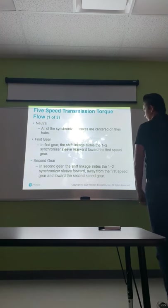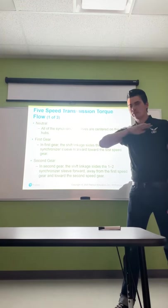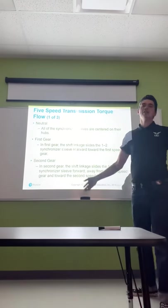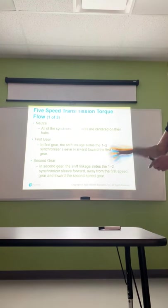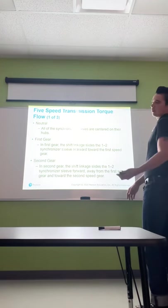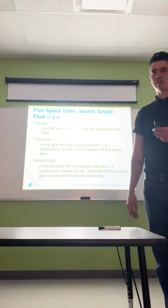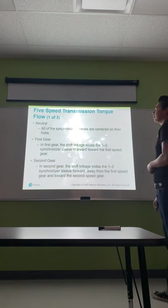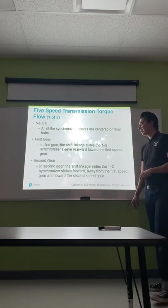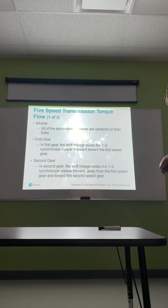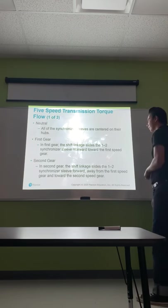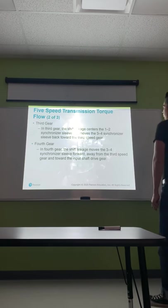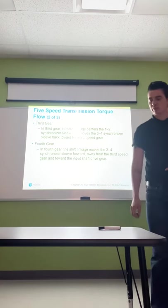Now let's talk about five-speed transmission torque flow. In neutral, all synchronizer sleeves are centered on their hubs — no gear is engaged. That's why you can put it in neutral and coast; you're not sending any torque out the output shaft. In first gear, the shift linkage slides the 1-2 synchronizer sleeve rearward toward the first speed gear. In second gear, the sleeve slides forward away from first gear toward the second speed gear. In third gear, the shift linkage centers the 1-2 synchronized sleeve and moves the 3-4 synchronized sleeve toward the third speed gear.